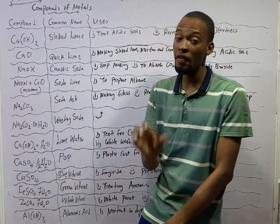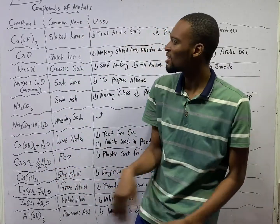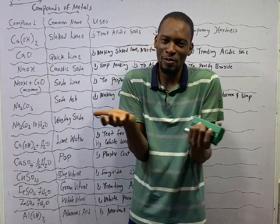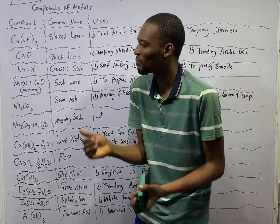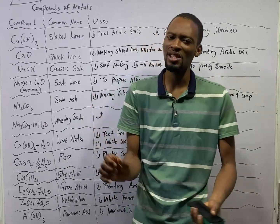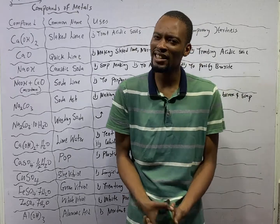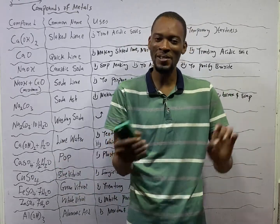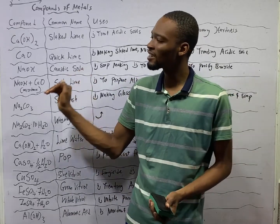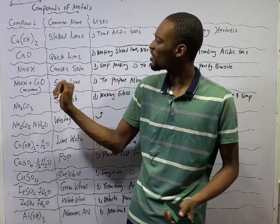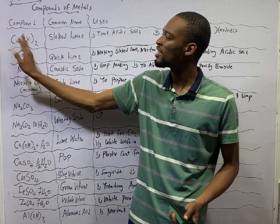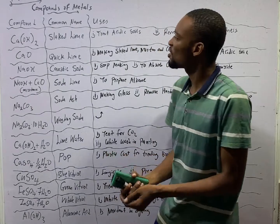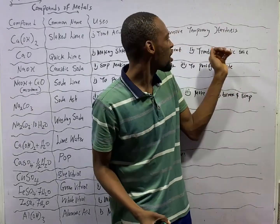The first compound of metal you should know is calcium hydroxide. The common name of calcium hydroxide is slaked lime. In chemistry, you are going to be hearing slaked lime, quicklime, washing soda, and so on. When you see slaked lime, know that we are talking about calcium hydroxide, Ca(OH)₂. Slaked lime is used to treat acidic soils and is used to remove temporary hardness.